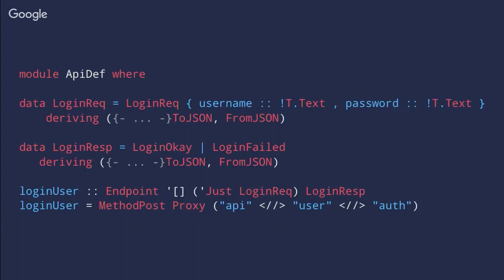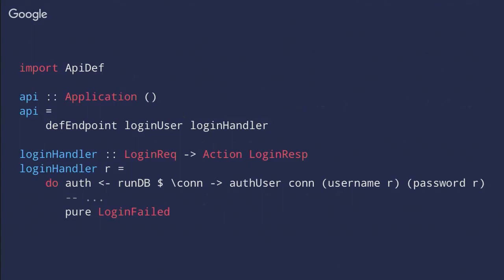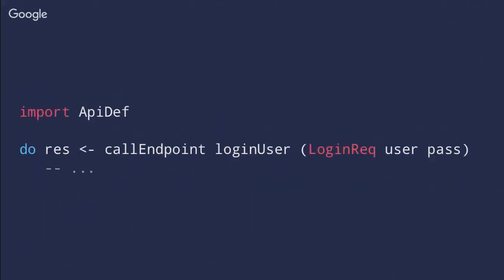We define our API with Haskell types, using Aeson for serialization. We have a LoginRequest with username and password, a LoginResponse that says login okay or login failed, and an endpoint - a POST endpoint accessible at /api/user/request_auth - that takes a LoginRequest and returns a LoginResponse. You have it all there in simple Haskell types.